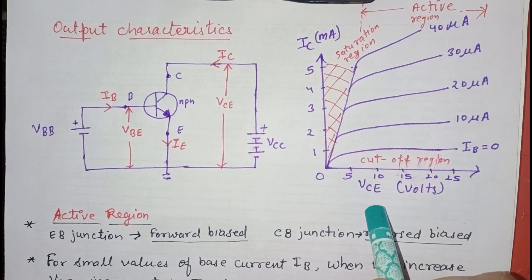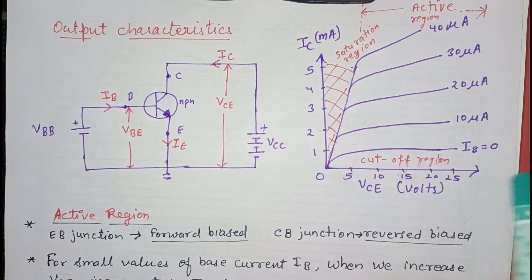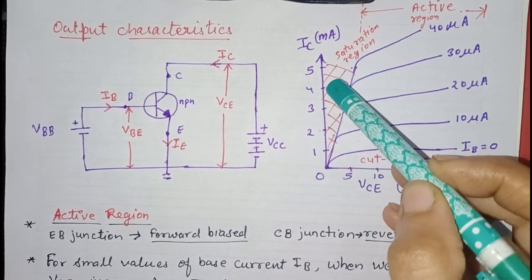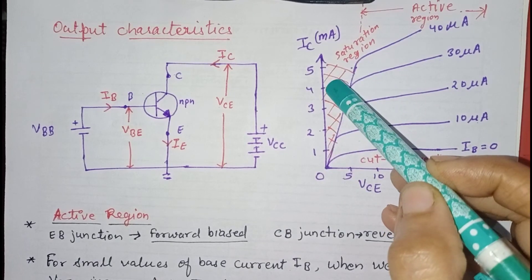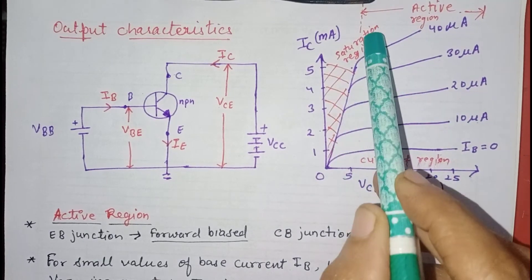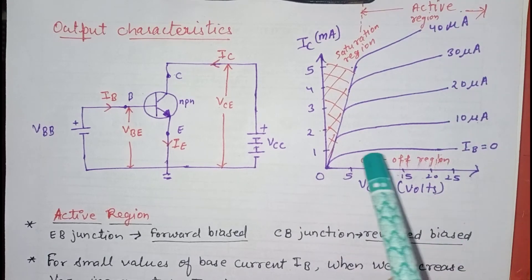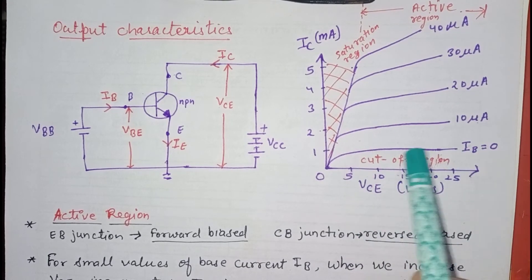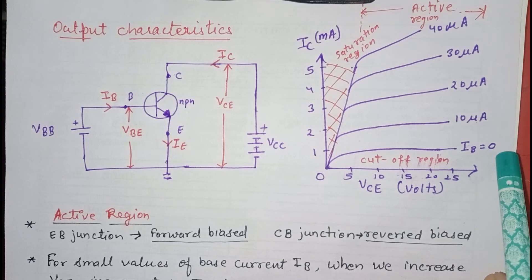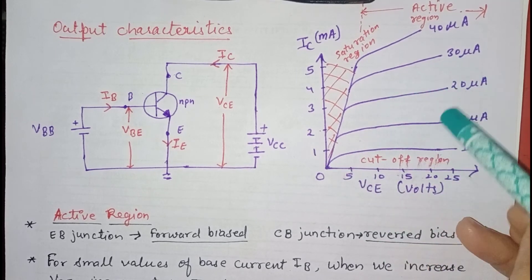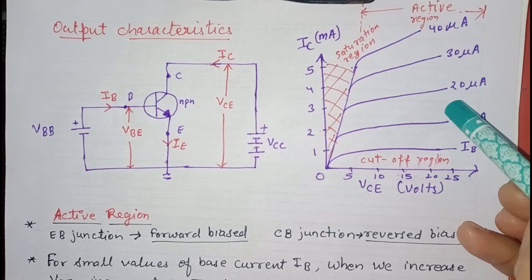Now we will analyze the output characteristics. We can see different regions: the region to the left of the saturation line is the saturation region, the region containing the nearly flat curves is the active region, and the region below the curve where IB equals zero is the cut-off region. We will explain each of these three regions one by one.